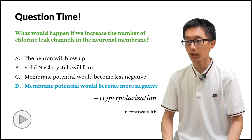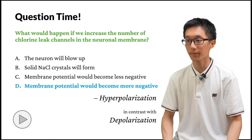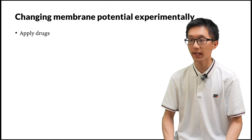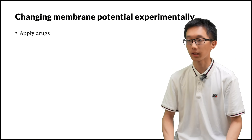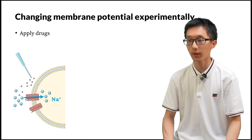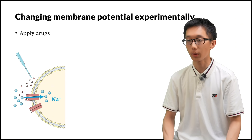In contrast, we also have depolarization, which means the neuronal membrane is less polarized — the membrane potential becomes less negative or even positive. How can we change the membrane potential experimentally? We have many ways. For example, we can apply drugs — some drugs bind to ligand-gated ion channels and open them. As ions start to flow, membrane potential changes. For example, sodium ion channels open and sodium flows in, thus depolarizing the neuron and making the membrane potential less negative.